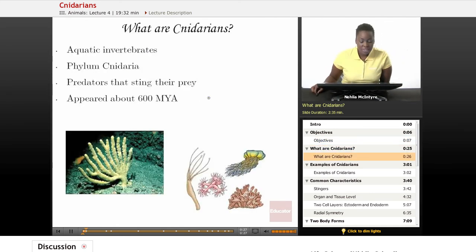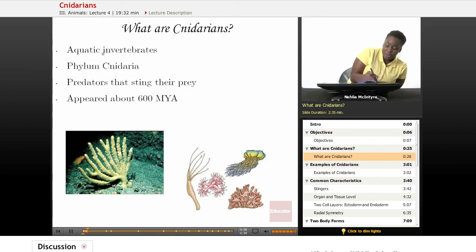Let's start by asking the question: what are Cnidarians? Well, Cnidarians are animals that live in mostly aquatic and oceanic environments, so they are aquatic invertebrates. And again, invertebrates are animals that have no backbone.